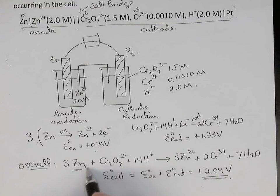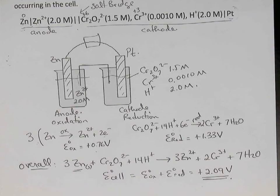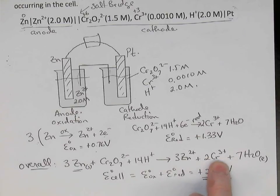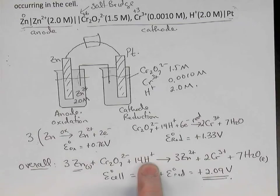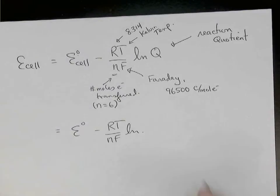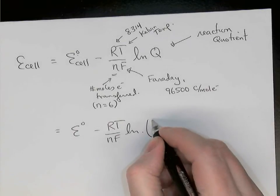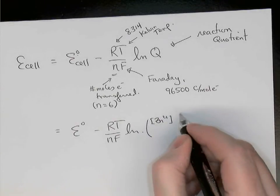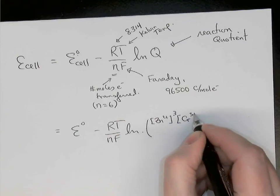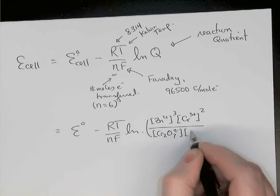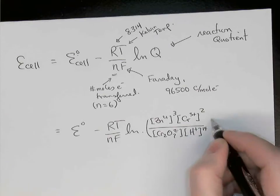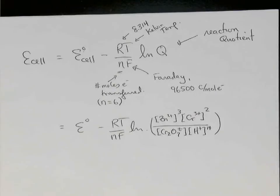So the zinc is a solid, so we won't include that in our equilibrium expression. The water is a liquid, we won't include that either. So we'll include the zinc concentration cubed times the chromium concentration squared, divided by the dichromate concentration, and the hydrogen concentration to the power of 14. So this is a rather ugly equilibrium expression.